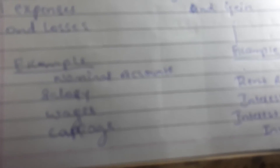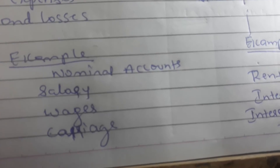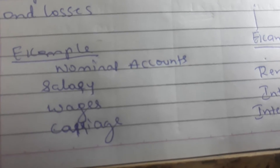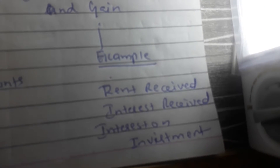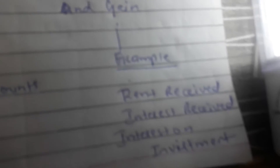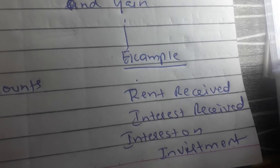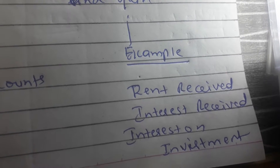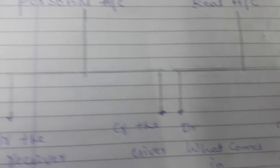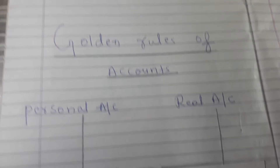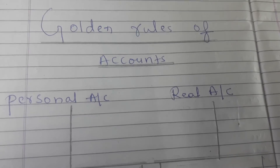Example of nominal account: salary, wages, carriage. Examples of income: rent received, interest received, interest on investment. This is a short video of golden rules of accounts.